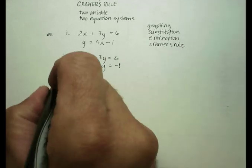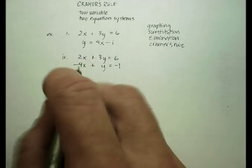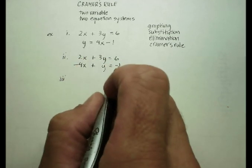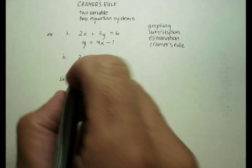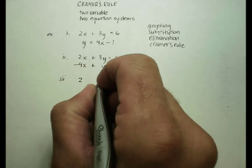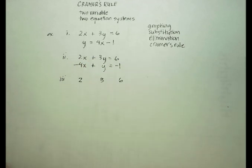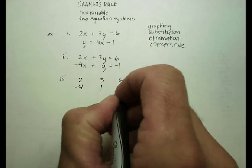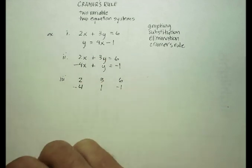The next step in Cramer's is to just take the coefficients, the numbers in front of the variables, and then the two numbers at the end. So I'm going to get 2, 3, 6, negative 4, 1, and negative 1, and create what's called a matrix.